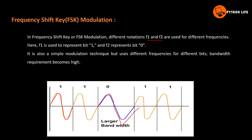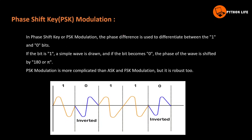Different frequencies use different bandwidths for different bits. This is frequency modulation — amplitude modulation uses amplitude, but frequency modulation uses frequency and wavelength. In Phase Shift Keying (PSK) modulation, the phase difference is used to differentiate between the 1 and 0 bits.